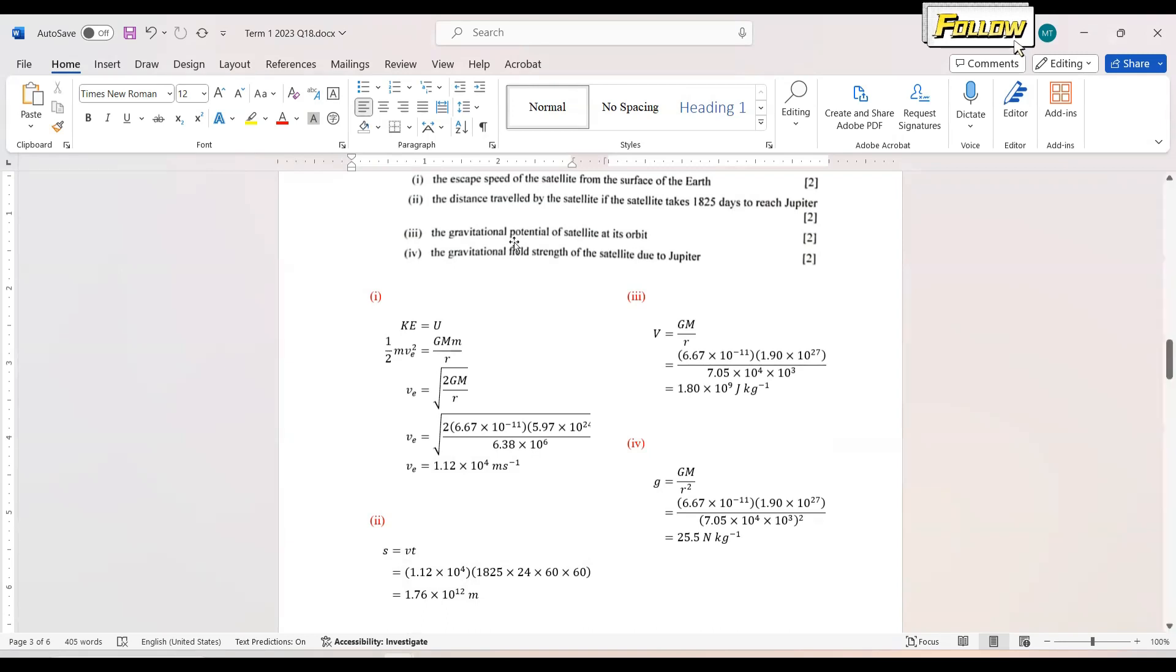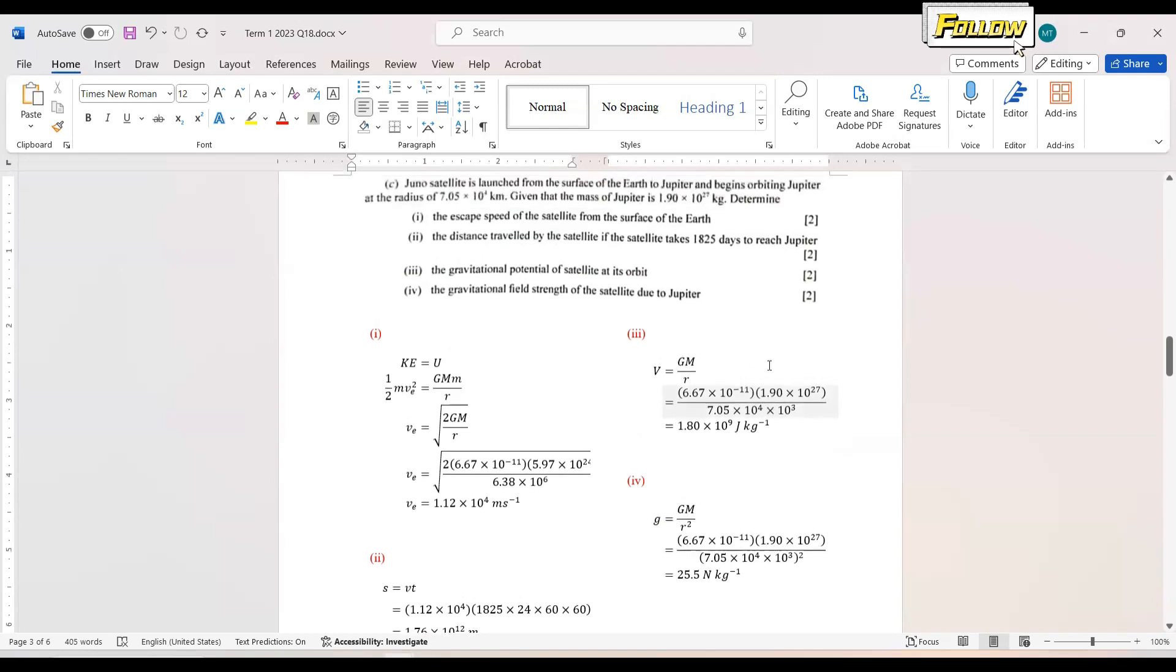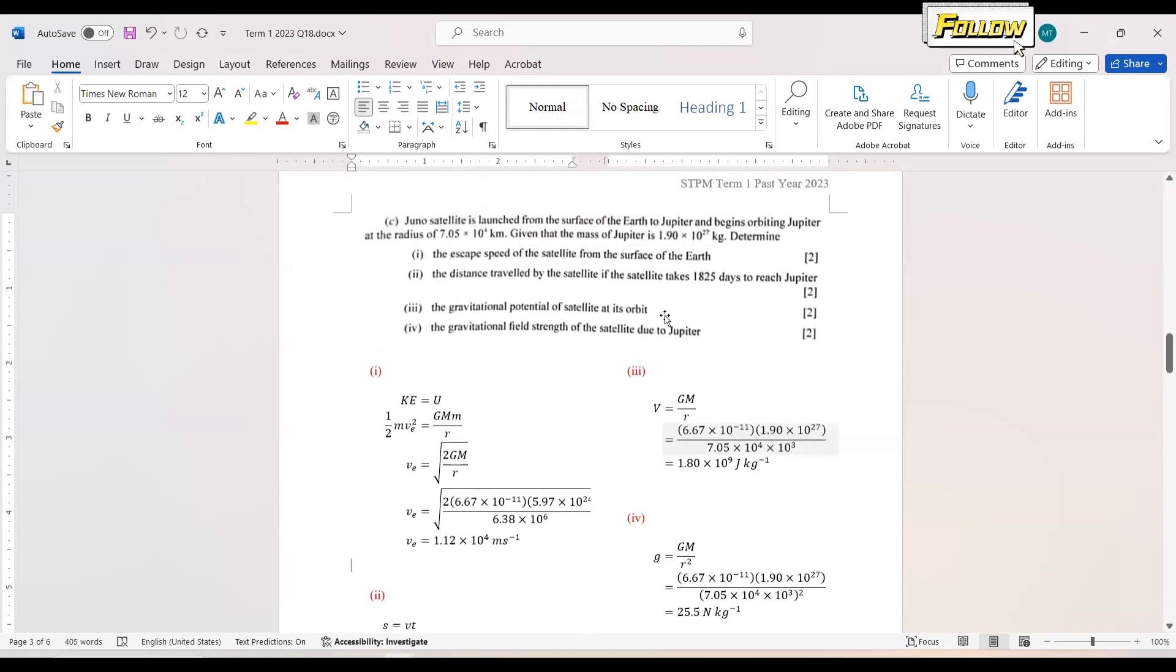And the next question is gravitational potential of satellite at its orbit. So here, I need to take note that the satellite now is orbiting around Jupiter. So here, the mass and the radius should refer to Jupiter, where we have the mass is given, and also the radius given in the question. So put in all those values. The answer here should be equal to 1.8 times 10 to the 9 joule per kilogram.